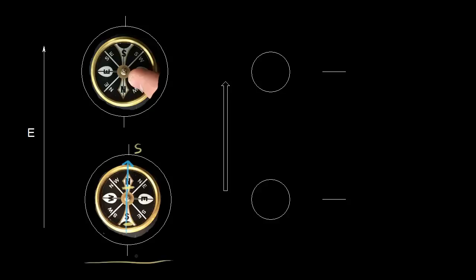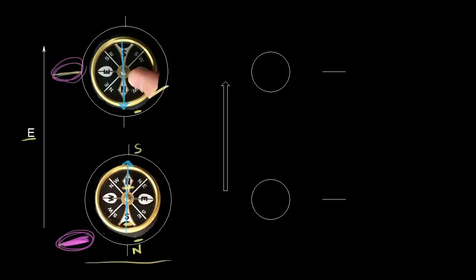When you put a compass needle into the Earth's magnetic field, it points north — that's the lower energy state. If you wanted to make the compass needle point in the opposite direction, you would have to put energy in to rotate it. So having the compass needle point down is higher in energy. If you let go, it automatically swings back to point north. This is the lower energy state, and the flipped position is the higher energy state.